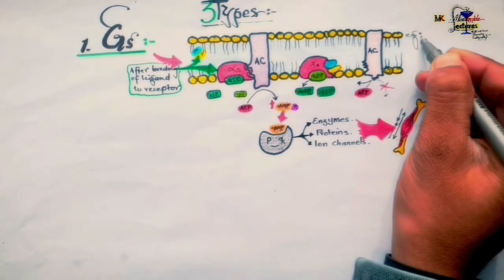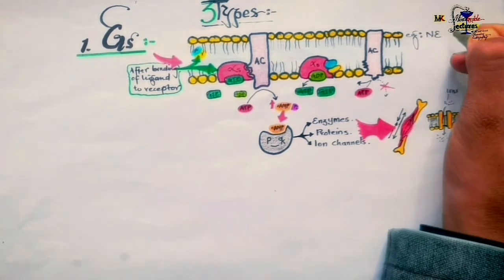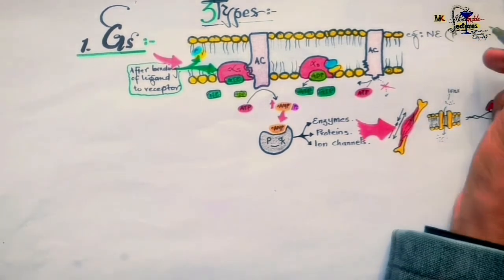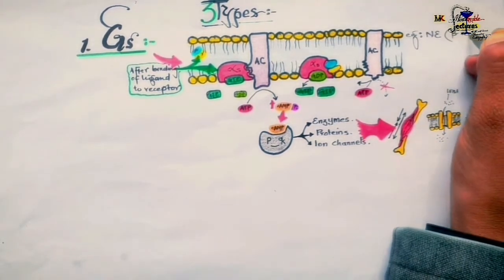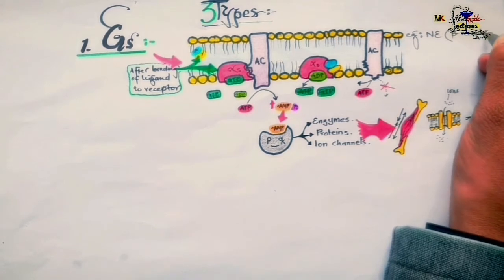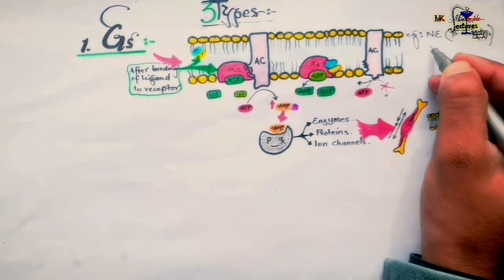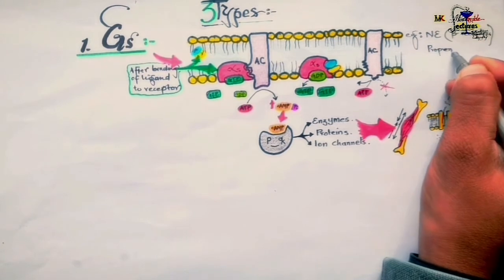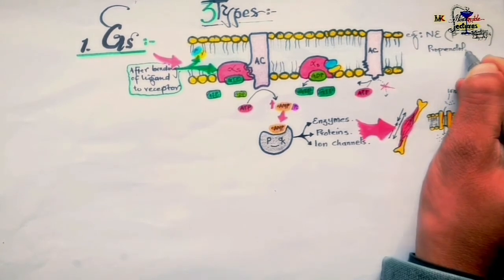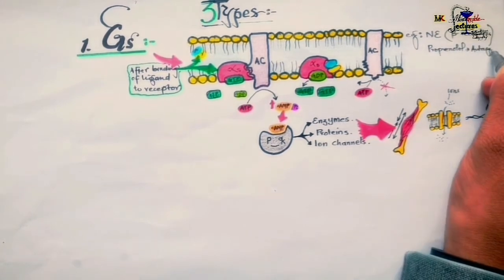Examples of drugs acting by this mechanism include norepinephrine acting on adrenergic beta receptors, with propranolol as the antagonist. Dopamine acting on D1 and D5 receptors are also examples of Gs G-protein-coupled receptors.